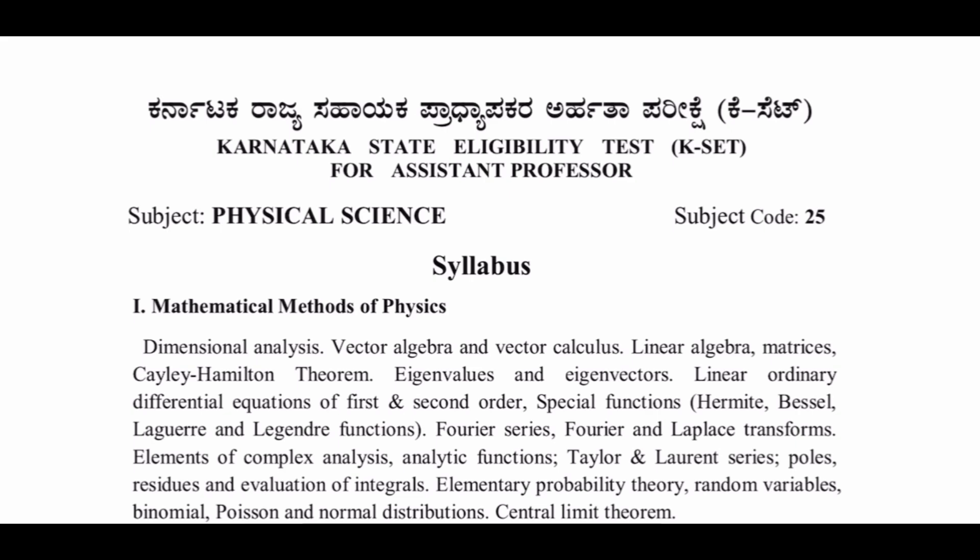Paper one belongs to the general paper — it is common for all subjects. Paper two is the main subject, meaning the specialized subject, where you will get questions related to your PG subject. In Physical Science, you will get questions from all your syllabus included in semester one to semester four, all combined together, and the question paper is framed accordingly.